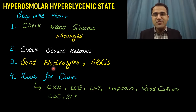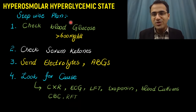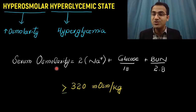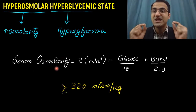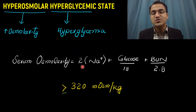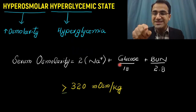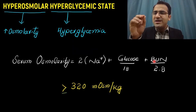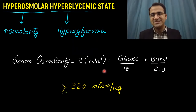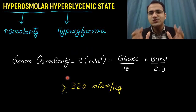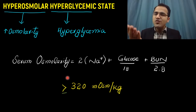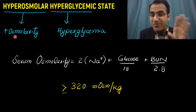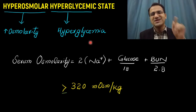When your electrolytes and RFTs are back along with blood glucose levels, you calculate the serum osmolarity. The serum osmolarity will be high — that is what makes HHS hyperosmolar. You calculate serum osmolarity through: 2 × sodium levels + (glucose in mg/dL ÷ 18) + (BUN in mg/dL ÷ 2). Normally serum osmolarity is between 270 to 290, but in these patients you would find it above 320 milliosmol per kg. They are hyperosmolar with hyperglycemia and no ketones — that is HHS.